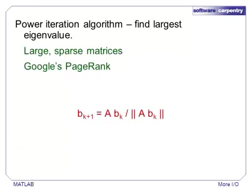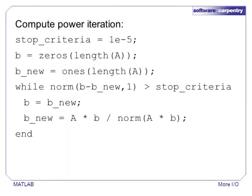Functions that iterate an unknown number of times often have status messages. An example of such a function is the power iteration algorithm, which finds the largest eigenpair of a matrix. It is often used on large, sparse matrices such as the matrix of weights used by Google's PageRank algorithm. The basic algorithm is embodied in the red equation, which is just a matrix multiplication and division by a scalar. Here is a piece of MATLAB code that computes the power iteration of a matrix A.